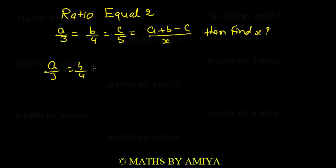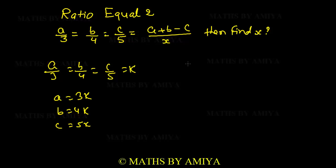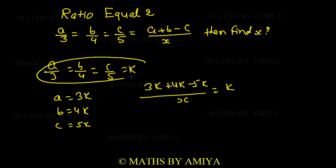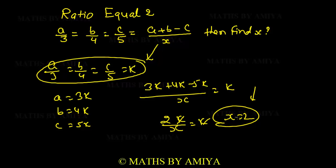So a = 3k, b = 4k, c = 5k. We put these values in our condition: (a+b-c)/x = (3k+4k-5k)/x = 2k/x, and this equals k. So 2k/x = k, k cancels out, and x = 2.